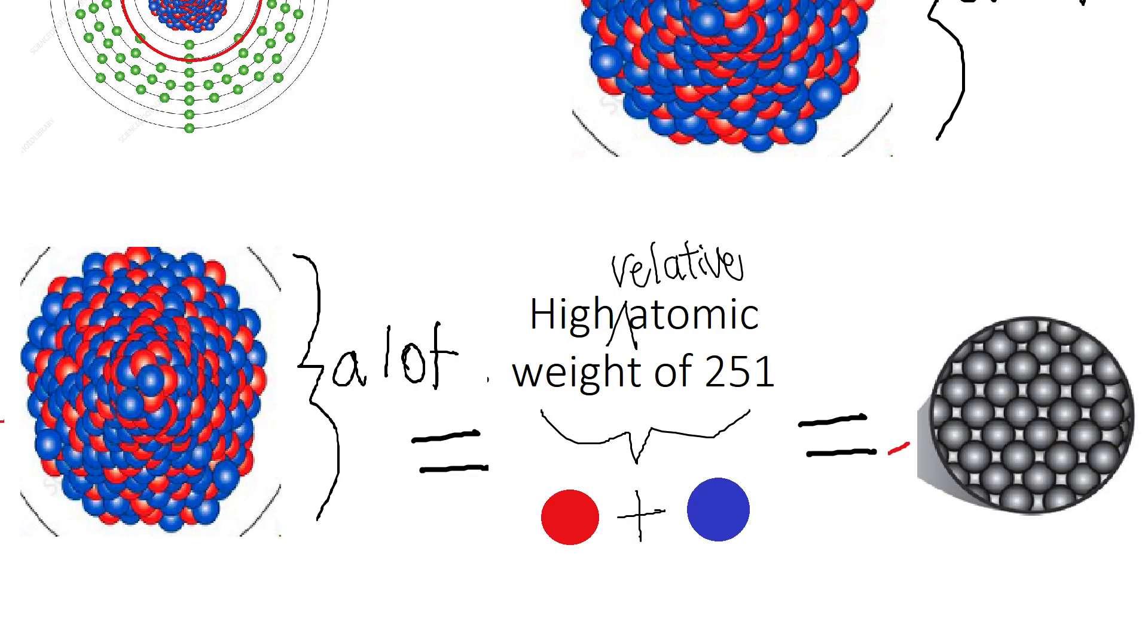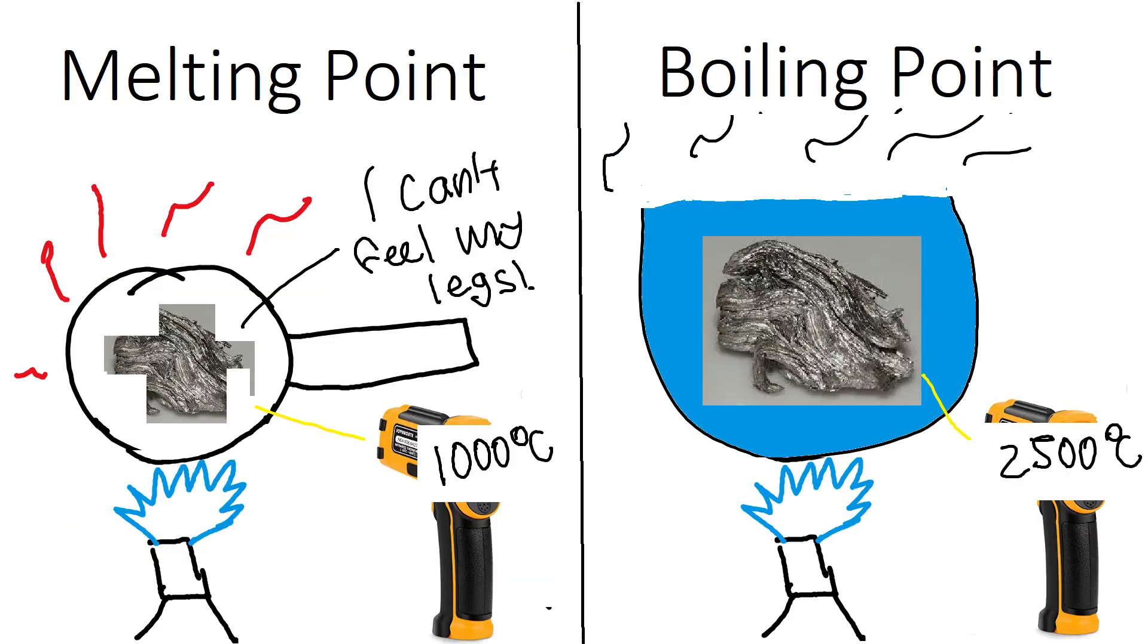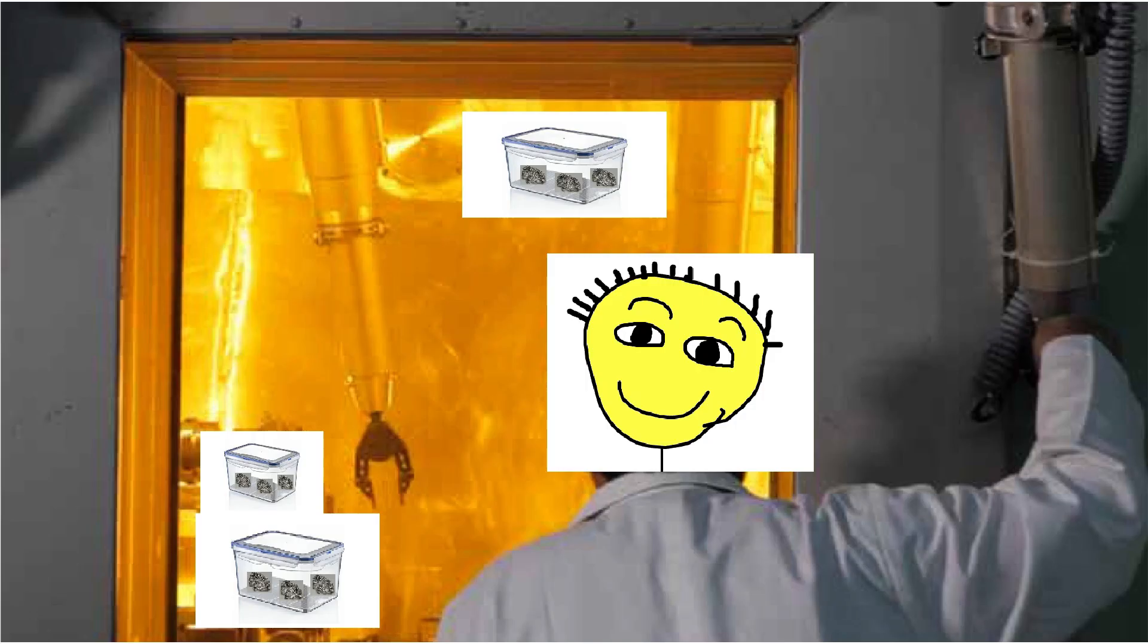Melting point: Californium has a high melting point of 900 to 1,110 degrees Celsius and also a boiling point in the range of 2,000 to 3,000 degrees Celsius based on extrapolation from its neighboring elements. However, both the melting point and boiling point of this element are hard to measure and not well understood because it depends on the purity. Due to its radioactivity, Californium is typically stored and handled in sealed containers under controlled conditions in specialized facilities.